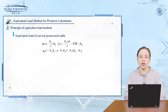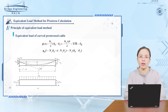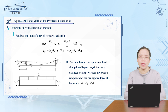The third term represents the change of cable curve inclination, as shown in the figure. We call this uniformly distributed load Q the equivalent load of the pre-stressed force on the beam. The total load Q along the full span length must be exactly balanced by the vertical downward component of the pre-stress force at both ends.